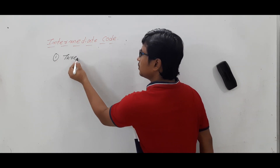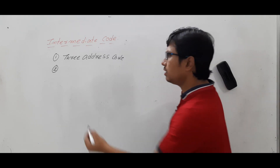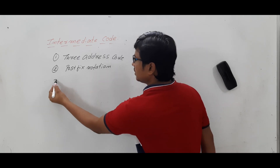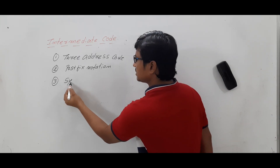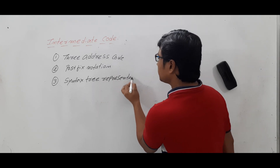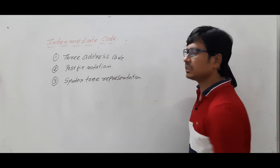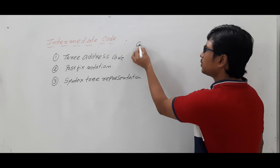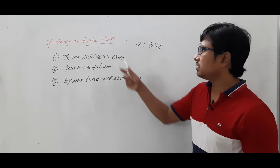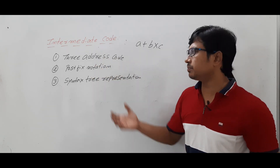The intermediate code can be represented in three ways. One is the three address code. The second one is the postfix notation. And the third is the syntax tree representation. So we can represent the intermediate code in these three ways. Let me take a simple example: a plus b into c. Now I want to represent this expression in three address code, postfix notation, and syntax tree representation. We will discuss each now.